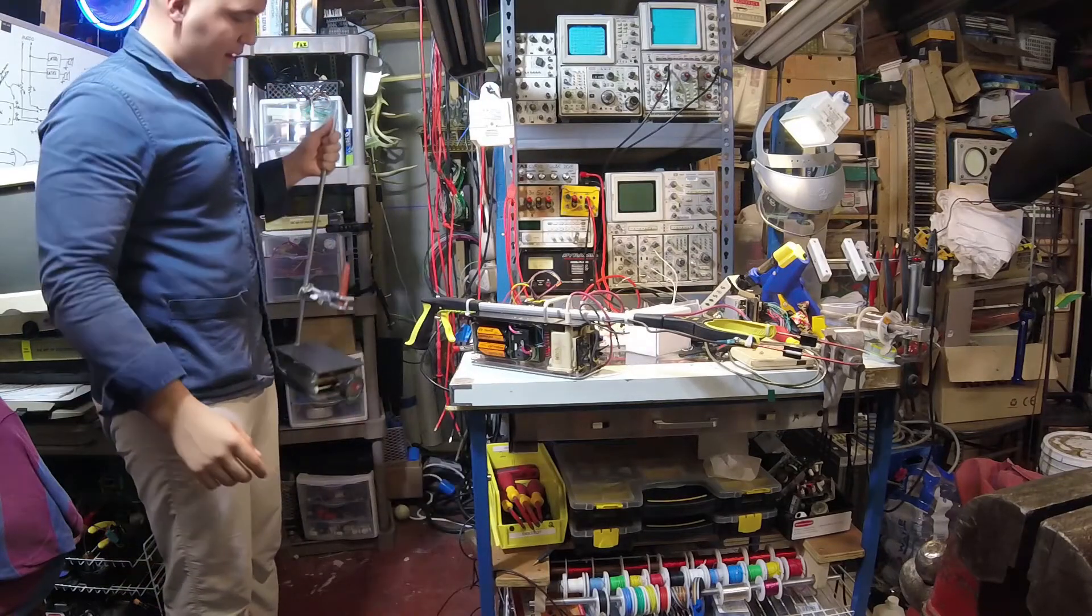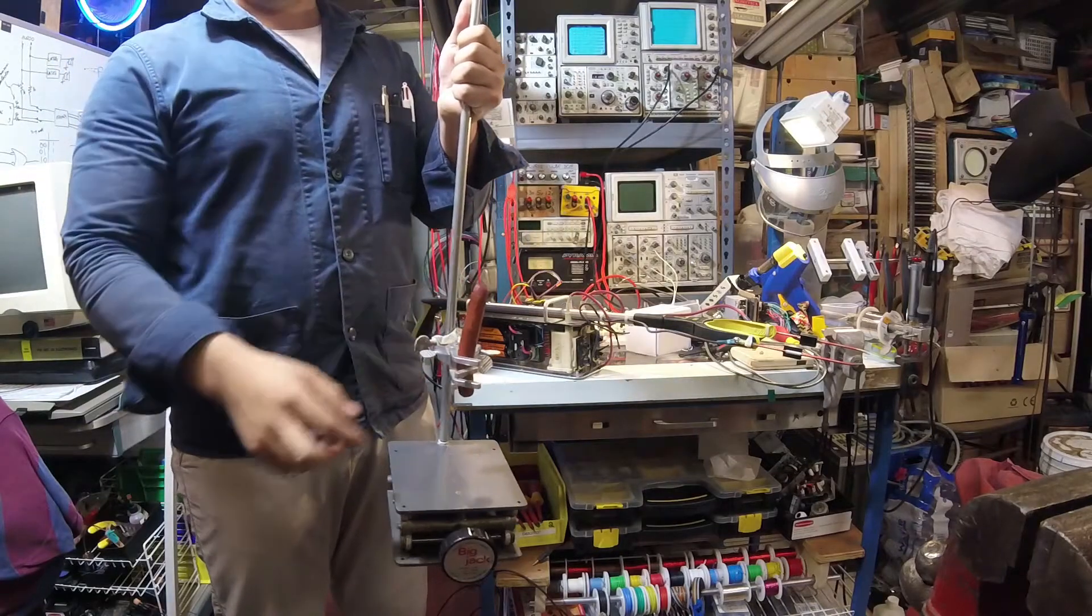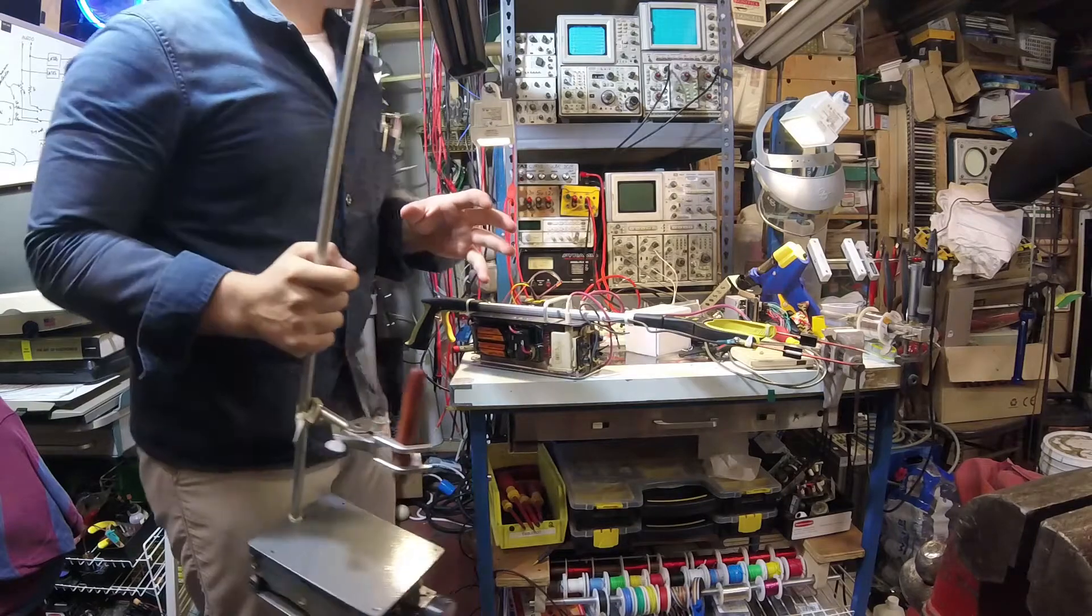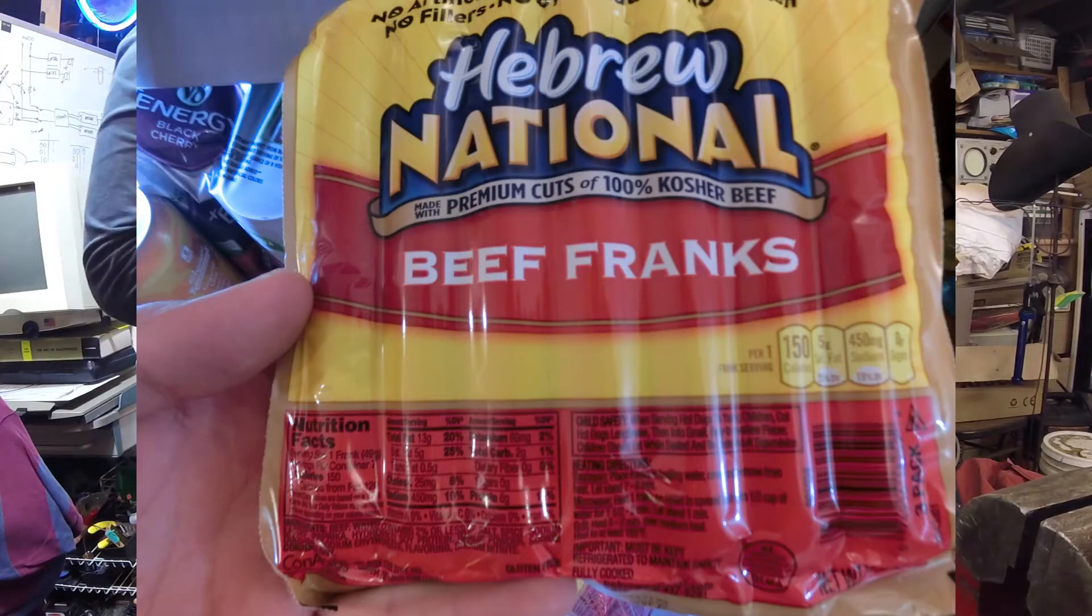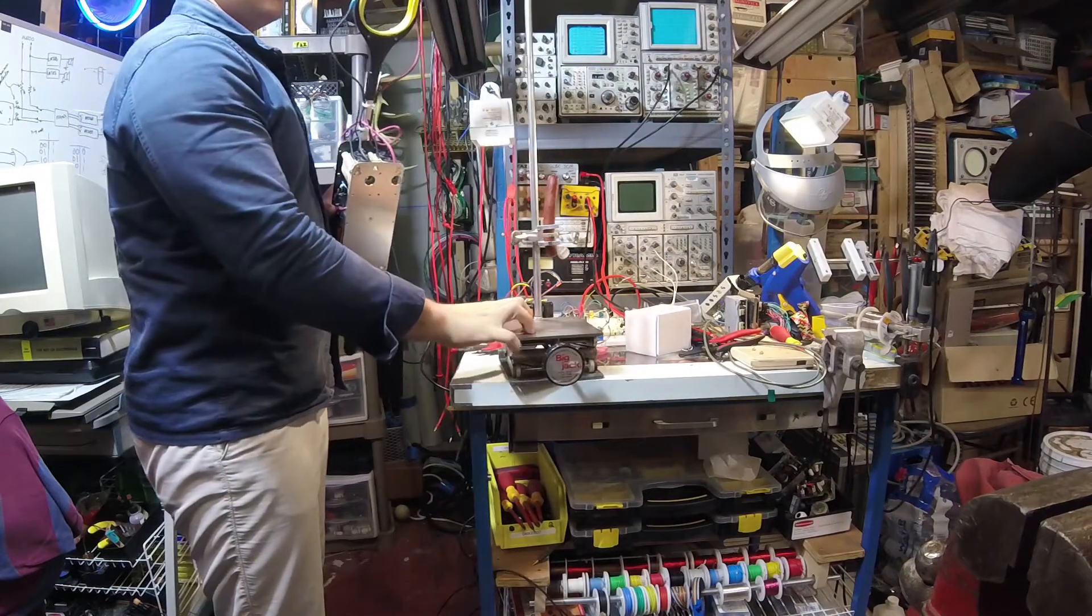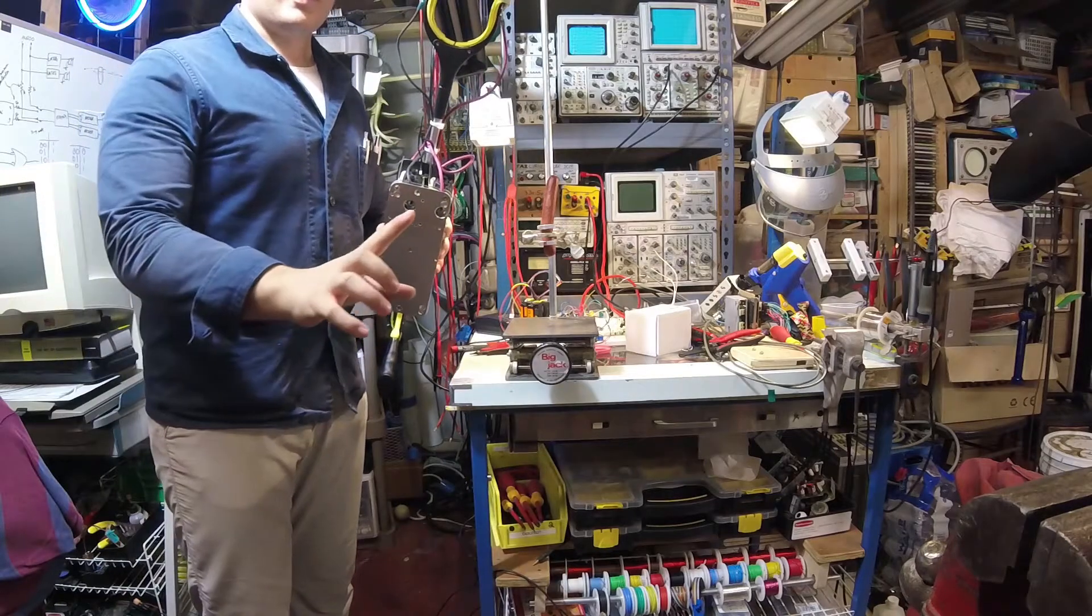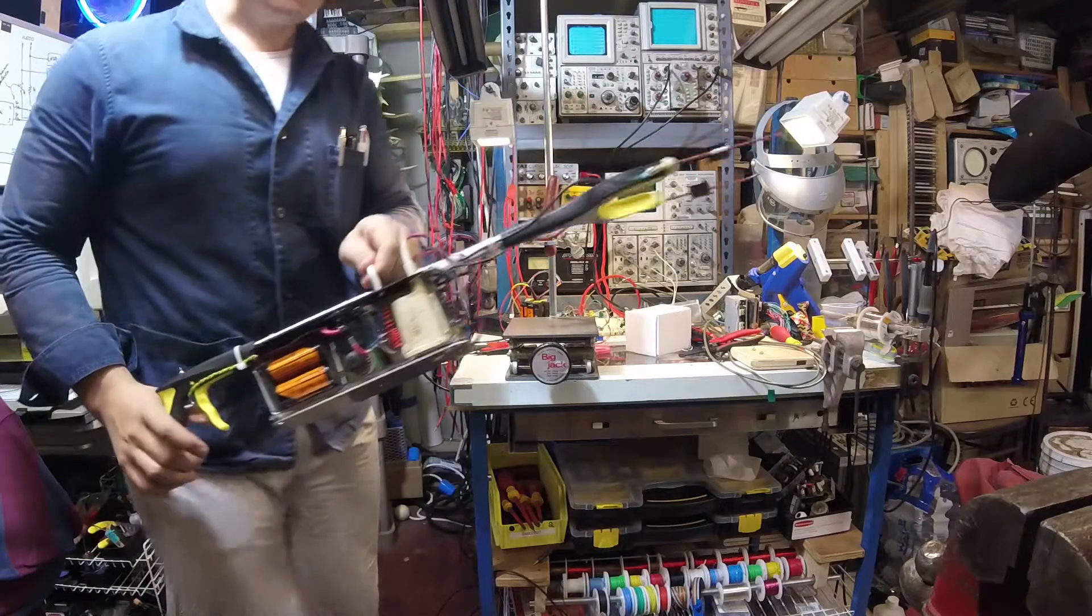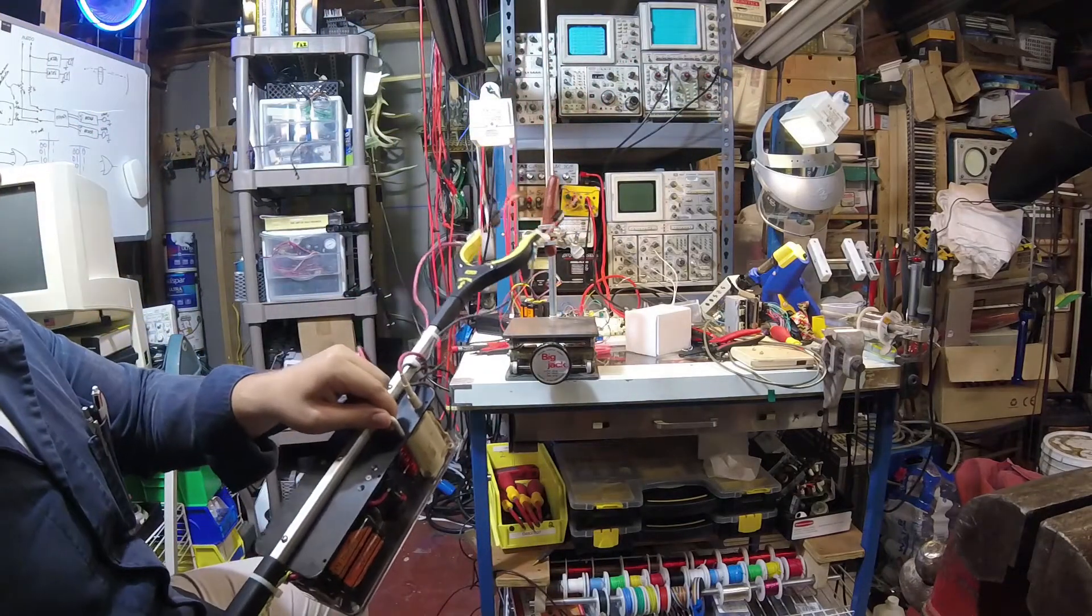Let's see what it does to a human analog. So here I have a hot dog. This is a Hebrew national hot dog. A good analog for the human finger. We're going to see what the shock wonder mark two does to it. See if we could cook it.